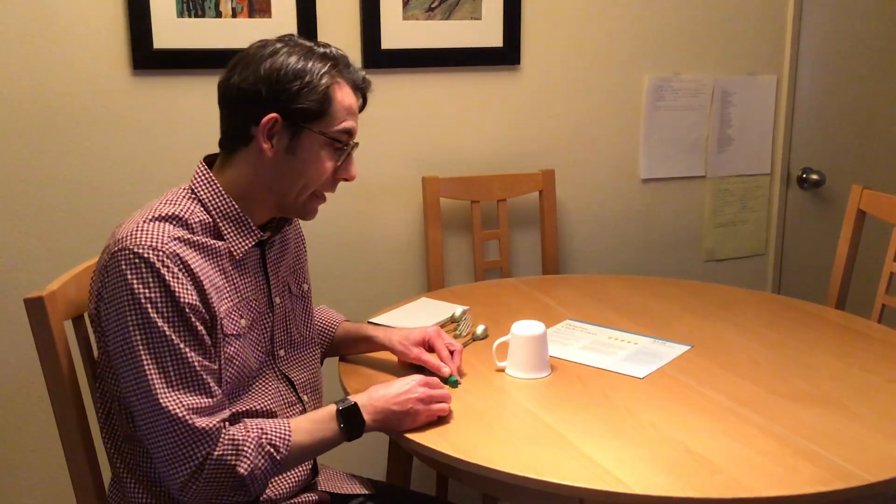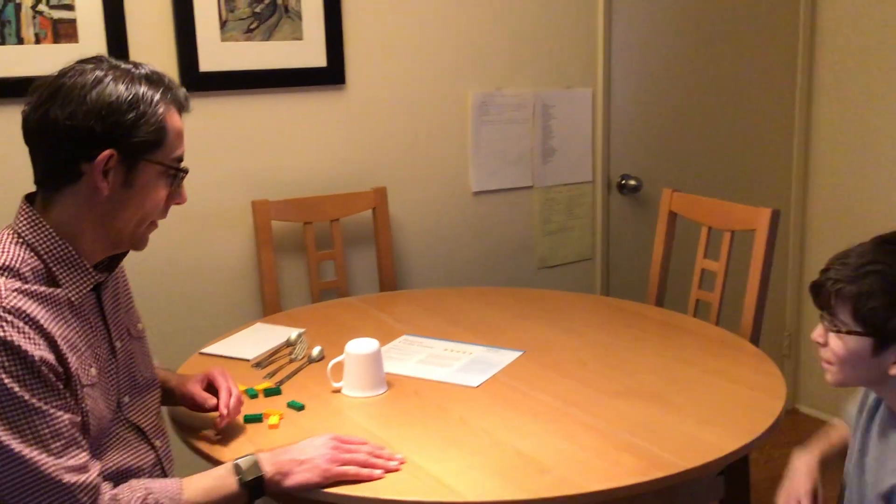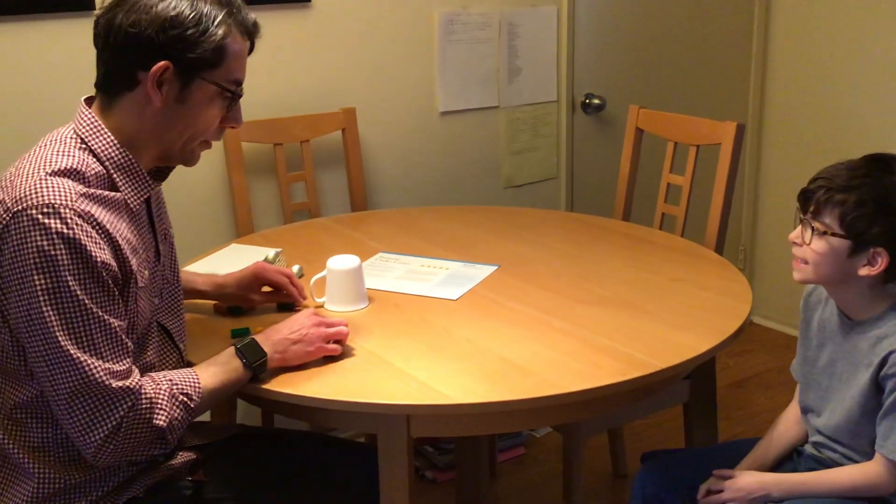And we're going to ask our child to predict the next step. So we'll try it right now. Emmett, come on over. Have a seat. Are you ready to play? Okay, here we go. Watch really carefully.